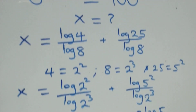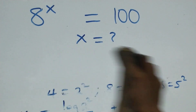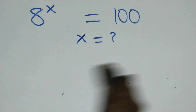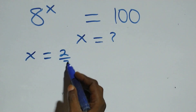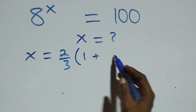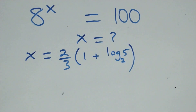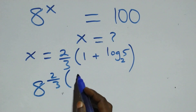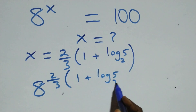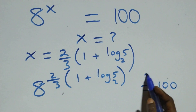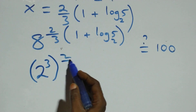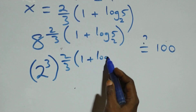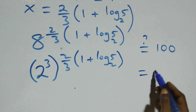Let's check if this satisfies the given problem. We substitute the value of x, which is x equals 2 over 3 times (1 plus log₂ 5), back in. What we have becomes 8 raised to power [2/3 times (1 plus log₂ 5)] equals one hundred. We can express 8 as 2 raised to power 3, raised to power 2 over 3 times (1 plus log₂ 5), equals one hundred.